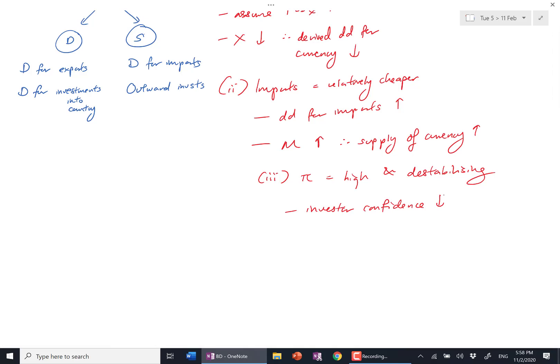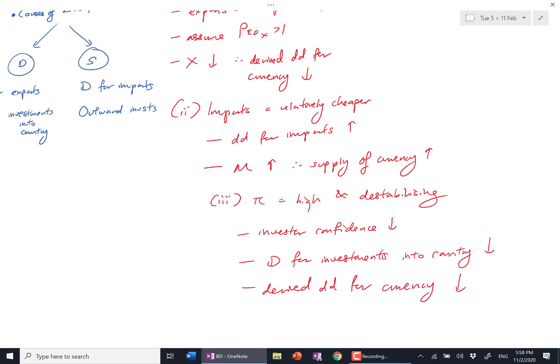So demand for investments into the country fall. Under my acronym, this is E for expectations, so derived demand for the currency falls. You know when writing points one, two, three, in my mind I'm thinking to myself, I got a little bit—